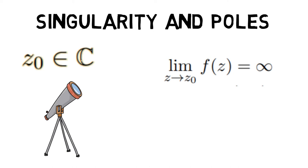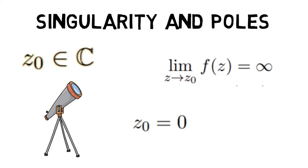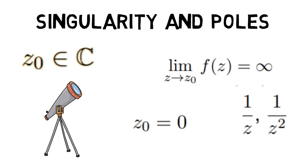A special case of singularity is called a pole and is defined as a limit from z to z0 f equals to infinity. For example, z equals 0 is a pole for 1 upon z and 1 upon z squared.